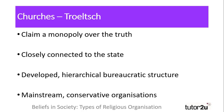Churches look to claim a monopoly over the truth, as do sects. However, they differ on other matters. Churches are more closely connected to the state and often are endorsed by the state. Churches have developed hierarchical and bureaucratic structures, with different strata of authority from ministers through to higher level authorities. And churches are largely mainstream and conservative organisations, preserving the status quo and reinforcing traditional norms and values.